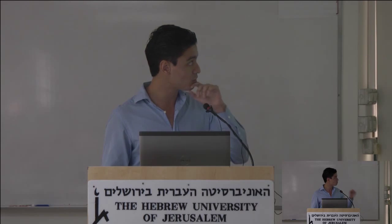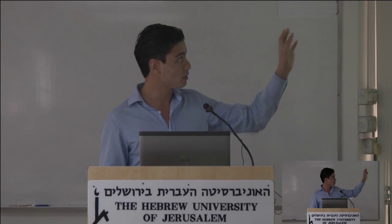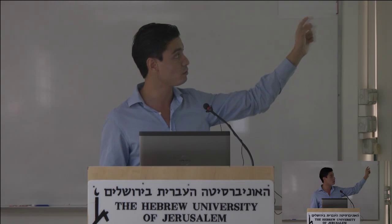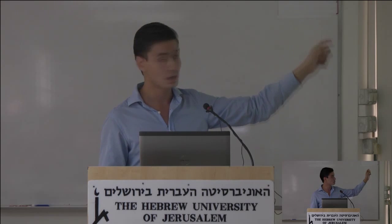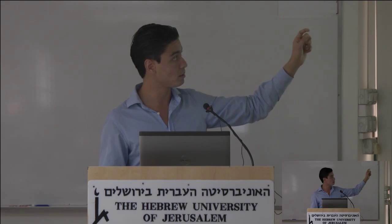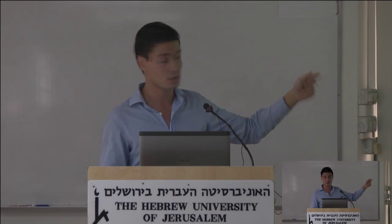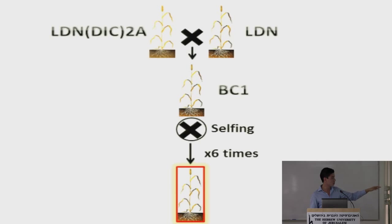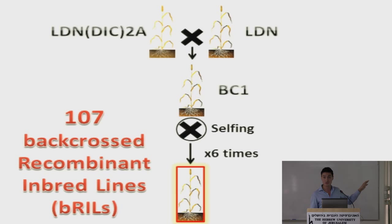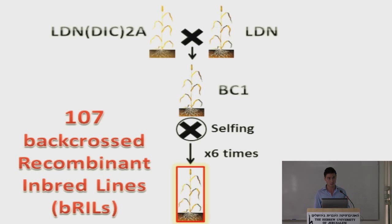The backcross one was self-fertilized six times until they got 107 backcross recombinant inbred lines, which we call BRILs. This was the plant material I worked with.